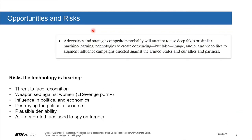Obviously, the risks are more interesting and probably what we should worry about most. As a start, I want to read an excerpt from the Worldwide Threat Assessment of the US Intelligence Community: 'Adversaries and strategic competitors probably will attempt to use deepfakes or similar machine learning technologies to create convincing but false image, audio and video files to augment influence campaigns directed against the United States and our allies and partners.' This shows the significance of the problem — it's not a problem of the future but a risk that is threatening today.